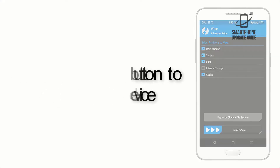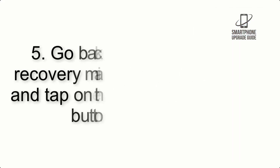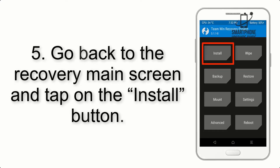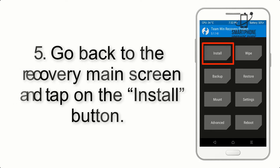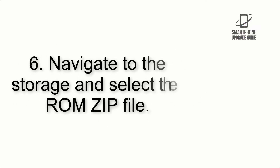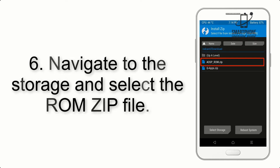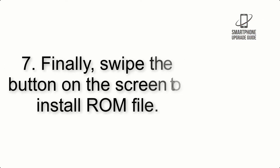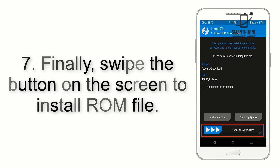Step 5: Go back to the recovery main screen and tap on the Install button. Step 6: Navigate to the storage and select the ROM zip file.